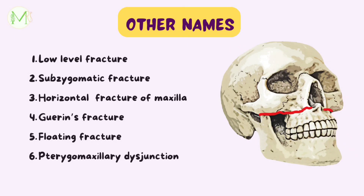Le Fort fracture 1 is also known as low level fracture, as it is present in the lower middle third of the face, and also called a subzygomatic fracture because it is present below the level of the zygomatic bone. The term floating maxilla or pterygomaxillary disjunction is used as there is separation of the complete dentoalveolar part of the maxilla. It has also got other names including Guerin's fracture and horizontal fracture of maxilla.